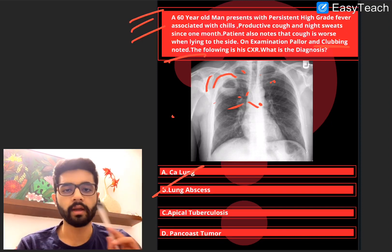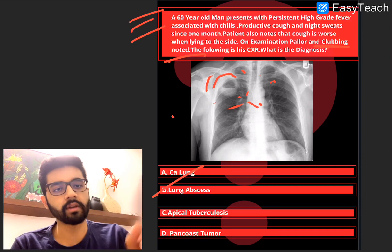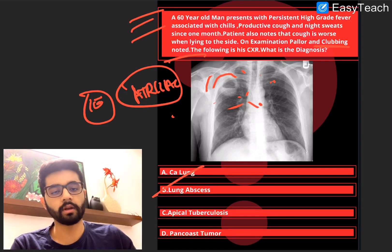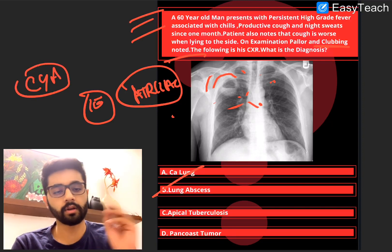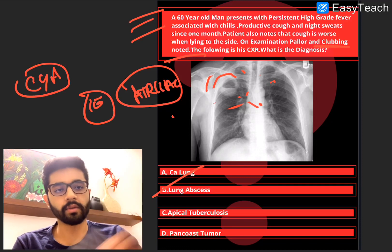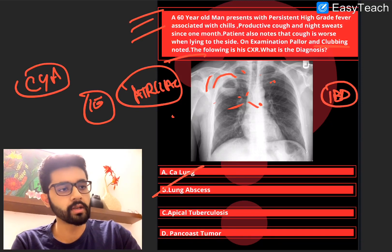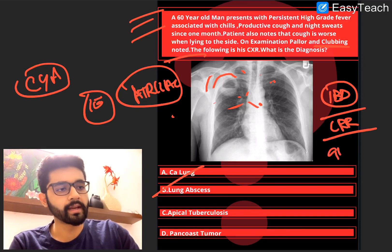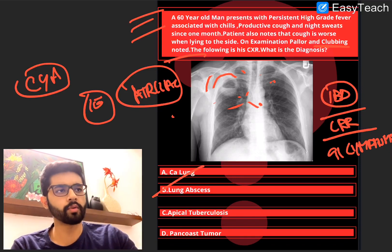Then, cardiac causes. Remember, cyanotic congenital heart disease can have clubbing — not acyanotic, congenital cyanotic heart diseases. You can also see it in infective endocarditis and also in atrial myxoma. Only three important cardiac causes of clubbing. Among the GI causes, a few important ones include IBD — inflammatory bowel disease — both ulcerative colitis and Crohn's. Liver cirrhosis has been associated with clubbing. And also some malignancies like GI lymphoma have been associated with clubbing. These are few important ones to highlight.